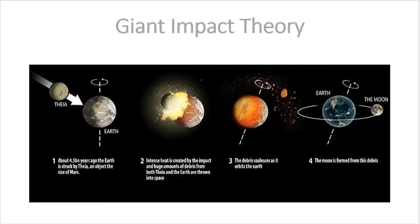What does a theory mean in science? A theory in science is a carefully thought out explanation for observations of the natural world, using the scientific method, which brings together many facts and hypotheses.